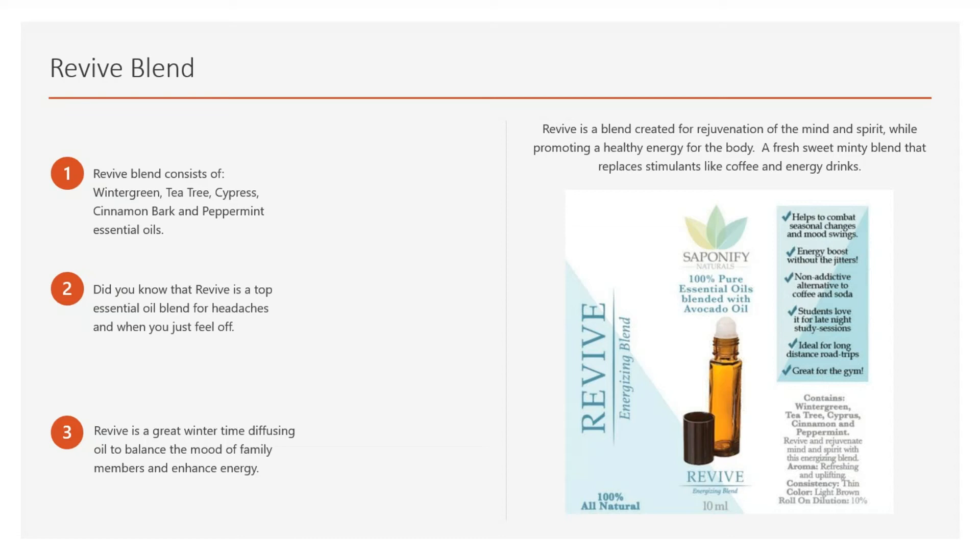Revive is something people are really taken back by initially because when they first use it, they're like, 'Wow, that's kind of potent.' It is pretty strong, and there are two reasons why. One is wintergreen, because the Revive Blend consists of wintergreen, tea tree, cypress, cinnamon bark, and peppermint essential oils. Wintergreen is potent because it has menthol, and so does peppermint — when you put those two together, they create a very strong blend. We break it up with tea tree and blue cypress. Blue cypress is a very expensive essential oil, and cinnamon bark is also a very expensive essential oil. Together, they create a blend with a sweet minty smell that is just amazing.